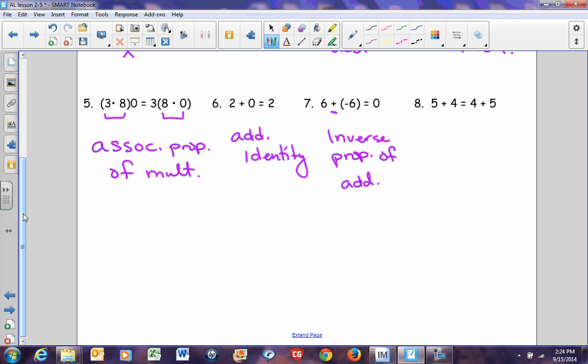And last but not least, we have 5 plus 4 equals 4 plus 5. There are no parentheses. There are no zeros. We didn't multiply everything by 1. But we did change the order. So it's the commutative property of addition.